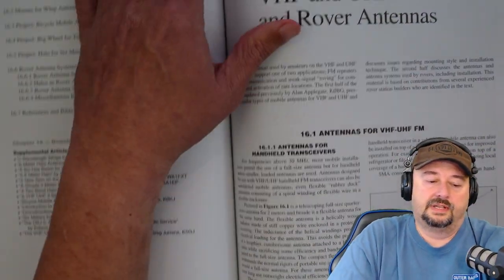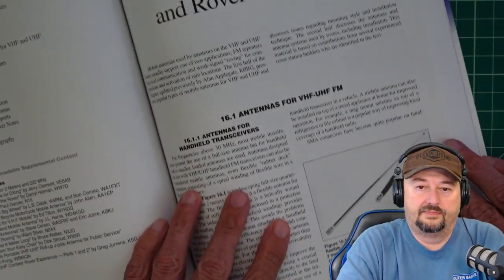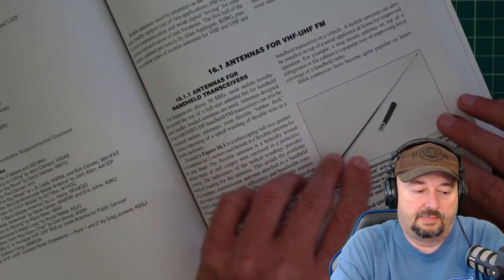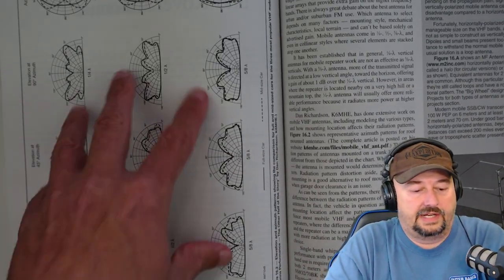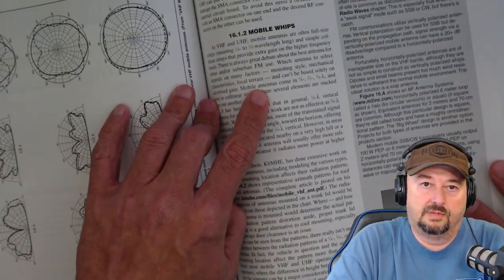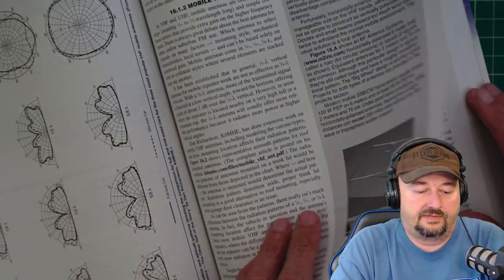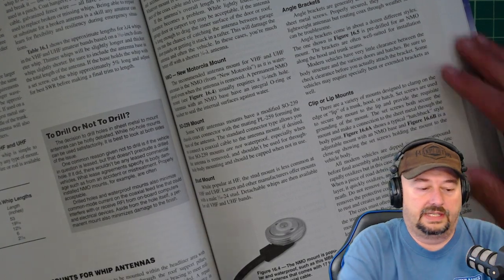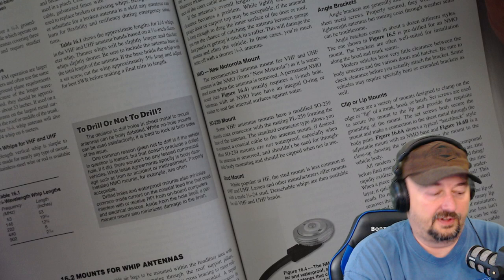So here's another section, Chapter 16, for VHF and UHF, mobile and rover antennas. And here's an example here. But basically, it goes over different plots, radiation patterns. Here's a section on mobile whips. And it really just goes over some considerations if you're going to mount antennas on your car. Like, here's NMO mounts, and if you want to drill a hole in your roof of the car.